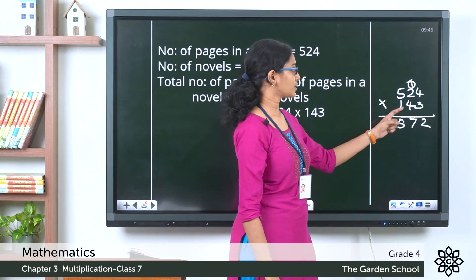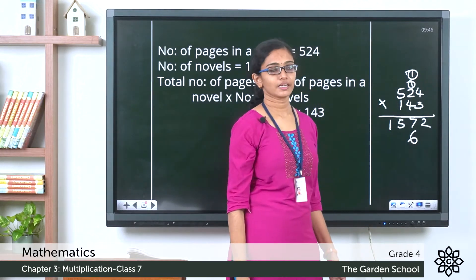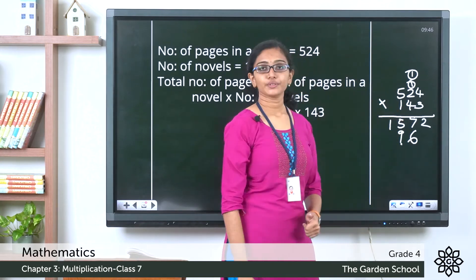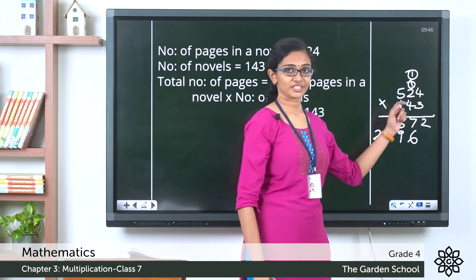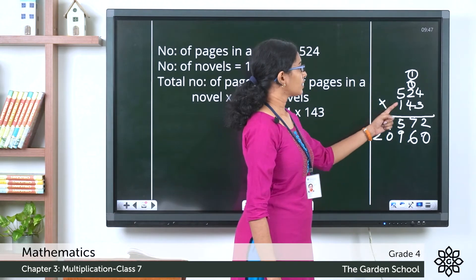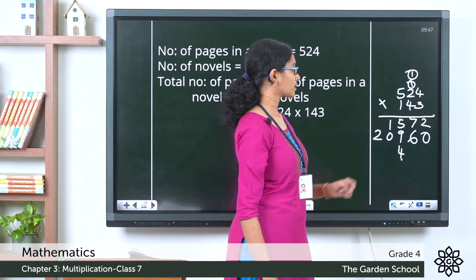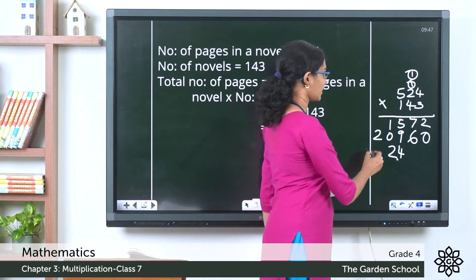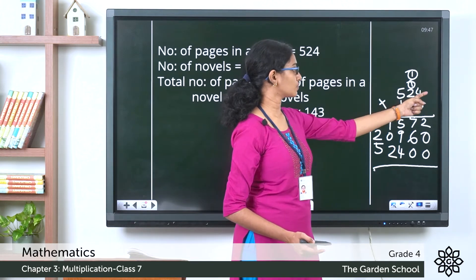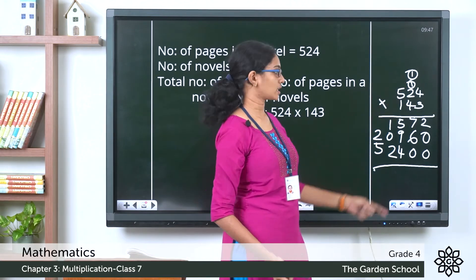Now the tens digit of the multiplier: 4 × 4 = 16, write 6 carry over 1; 4 × 2 = 8, plus 1 = 9; 4 × 5 = 20. Put a zero at the end to keep place values correct. For the hundreds digit: 1 × 4 = 4 in the hundreds column; 1 × 2 = 2; 1 × 5 = 5. Put two zeros at the end, because we are actually multiplying by 100.